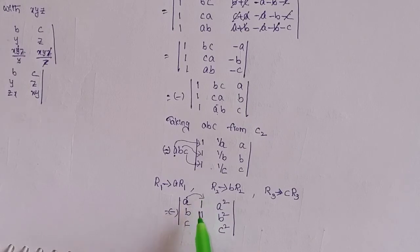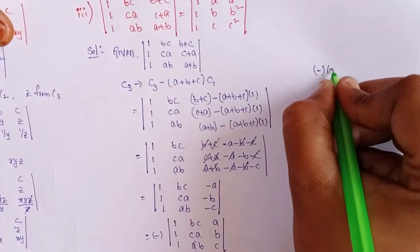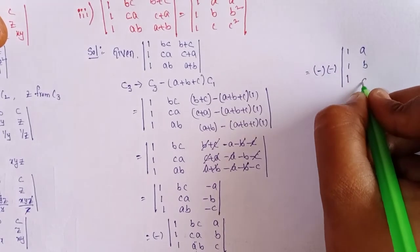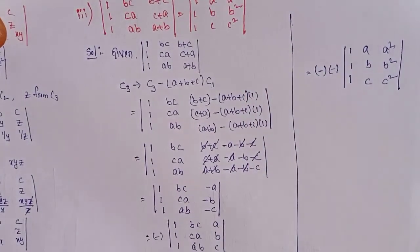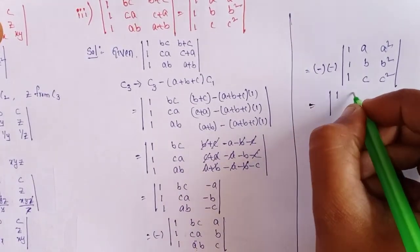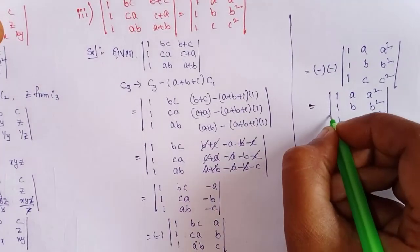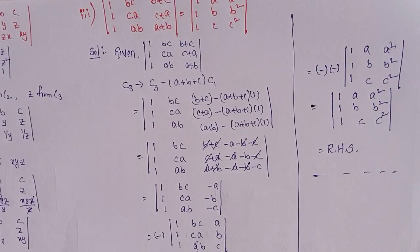Interchange C1 and C2: one minus is already there, another minus from the interchange. Minus into minus gives plus. So we get determinant of [1, a, a²; 1, b, b²; 1, c, c²]. This is the required RHS. Proof complete for problem 3. Fifth question, problems 1, 2, 3 are complete. Next class we will discuss the sixth question. Thank you for watching, take care.